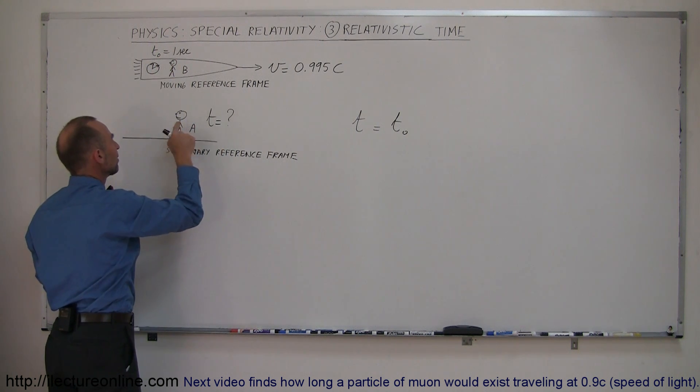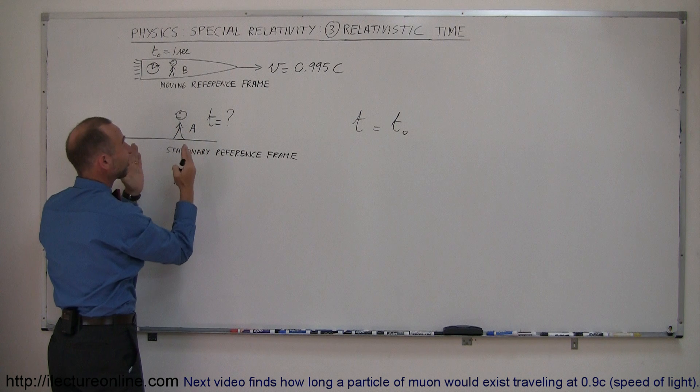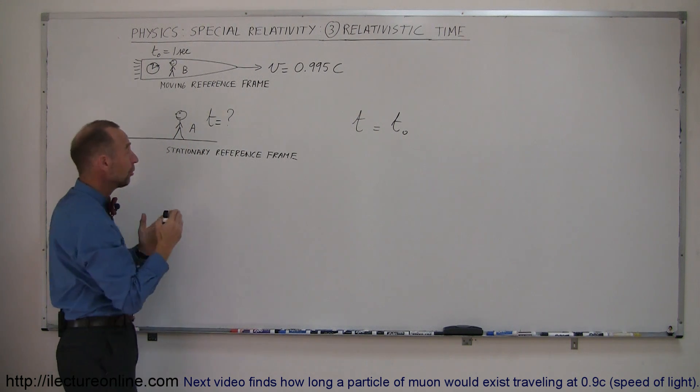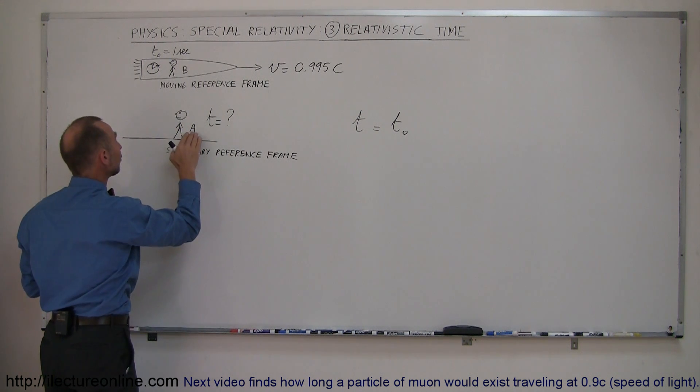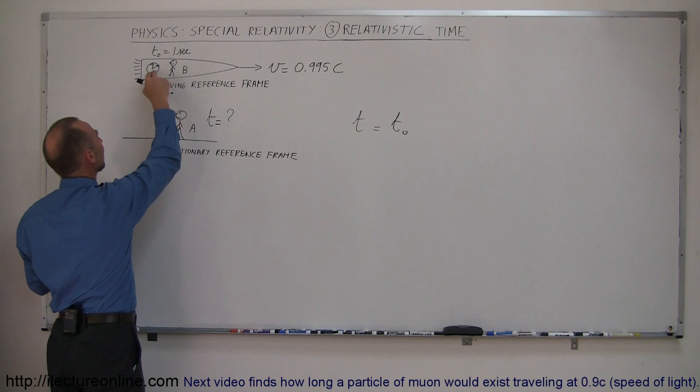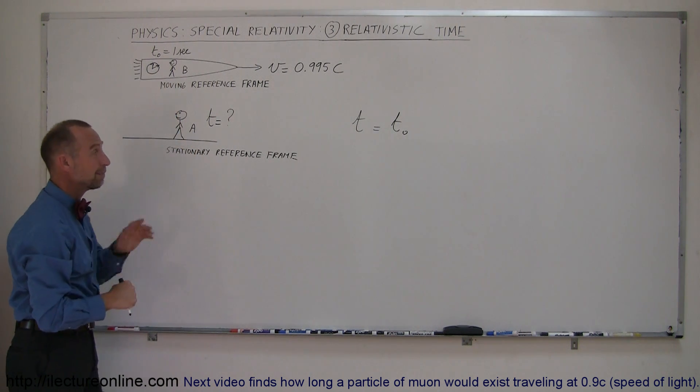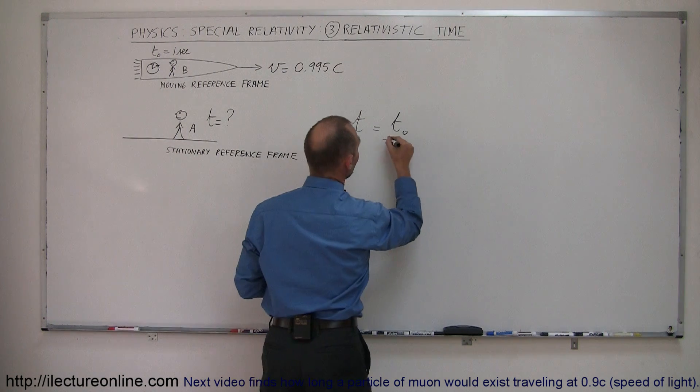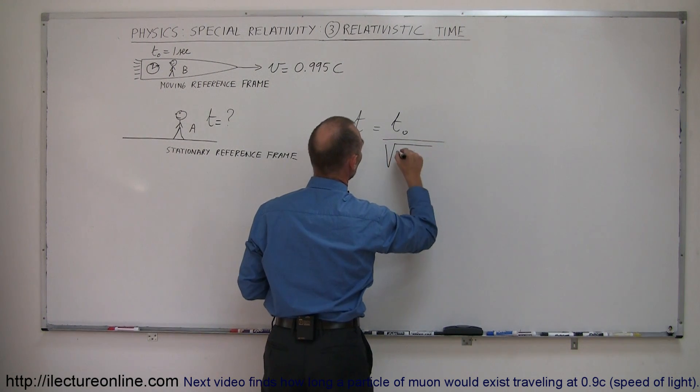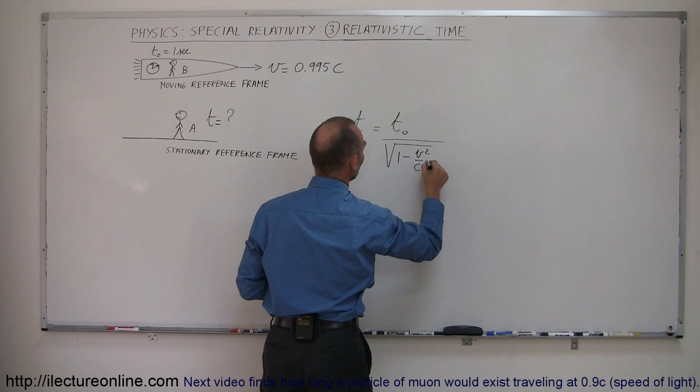T is the time seen by Observer A. Even though Observer A is stationary in reference to the Earth, Observer A is moving in relationship to the clock because the clock is moving in relationship to Observer A. So T equals T₀ divided by the square root of 1 minus V²/C².